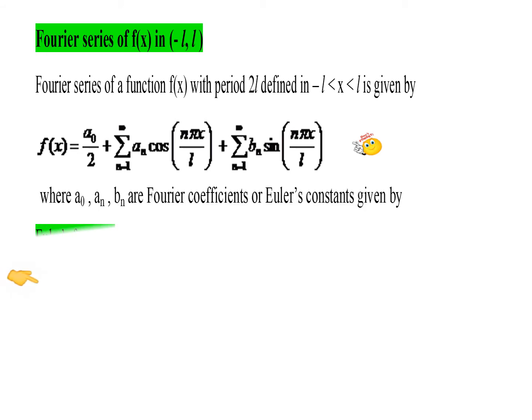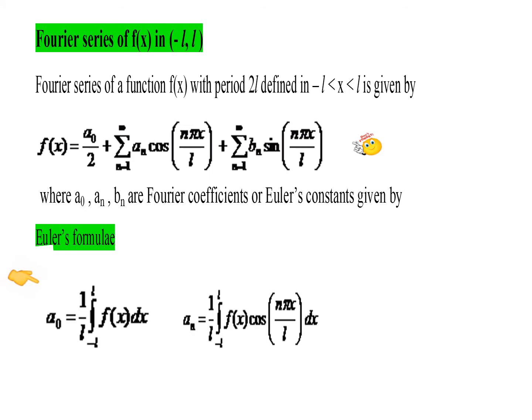Next we have the formulas for the Fourier constants A₀, Aₙ, and Bₙ — learn these formulas, as they are specifically for the interval minus L to L.